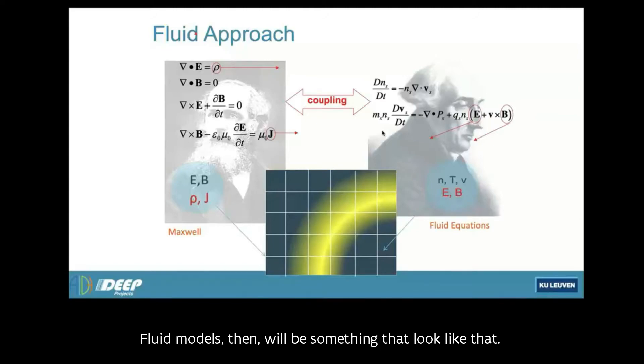Fluid models would be something that looks like that. There will be a computational grid, and in each cell you will have certain information about the local properties of the system.